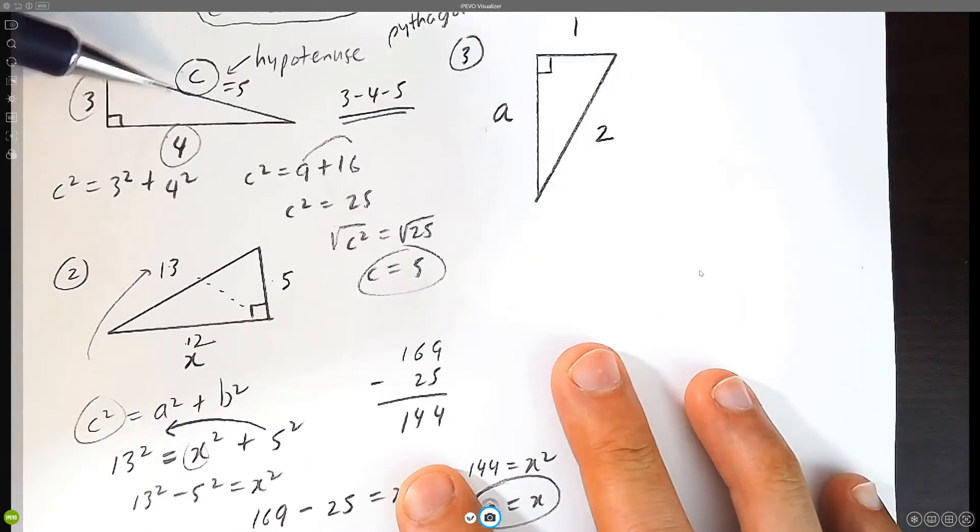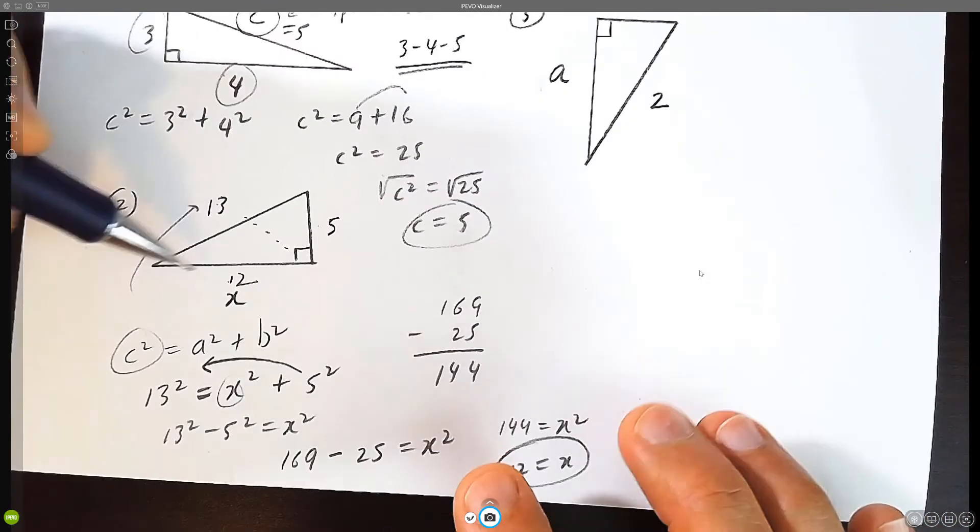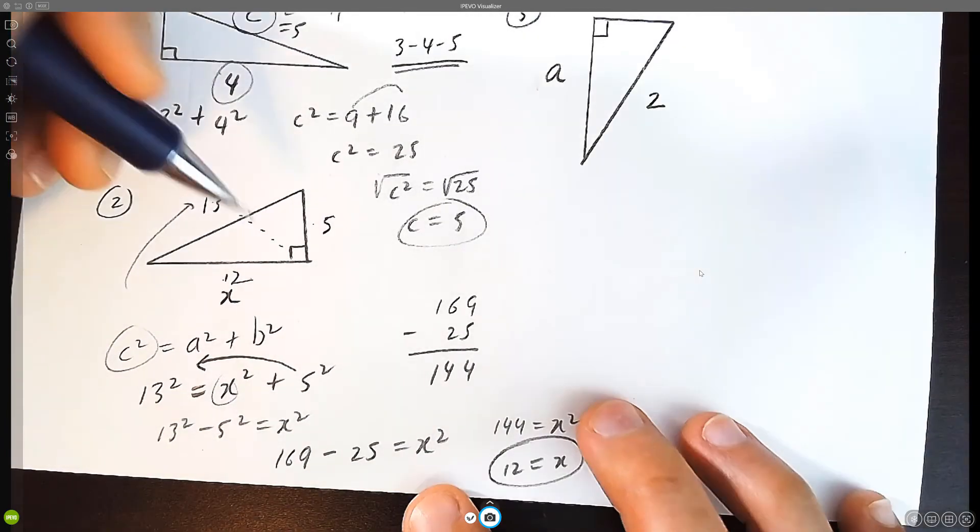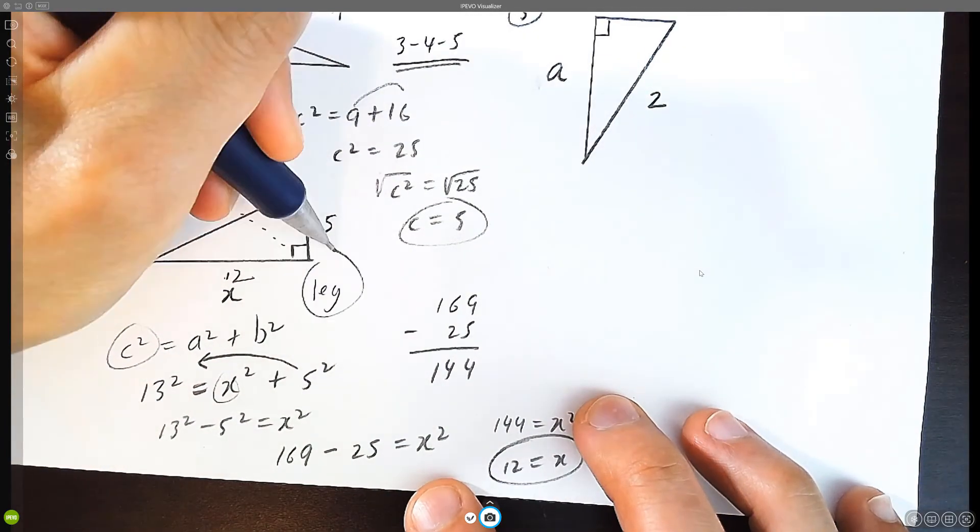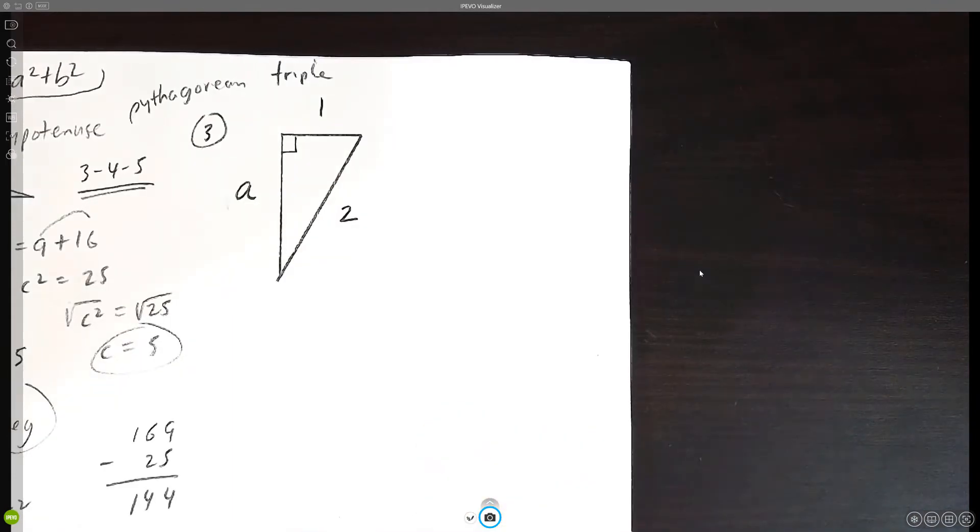Okay, so the first example we did, we solved for the hypotenuse. The second example we solved for a side length. It's called a leg, a triangle leg. And now, let's try this example. How is it different?